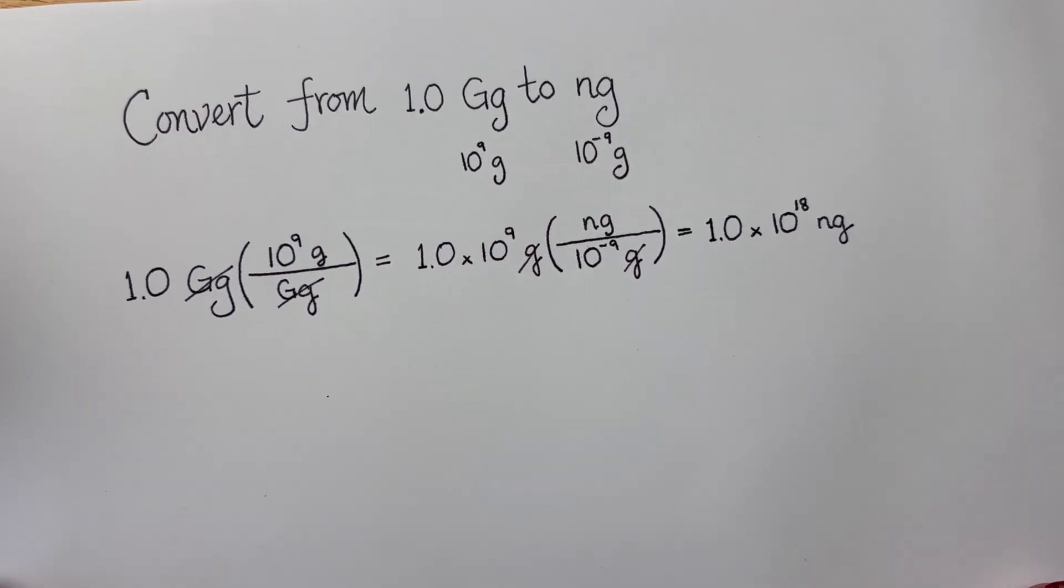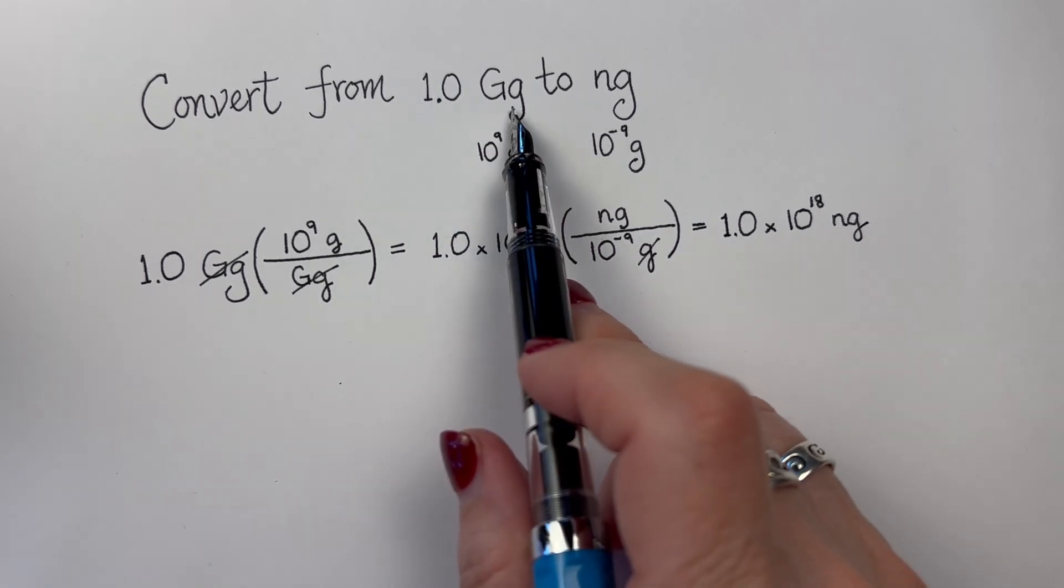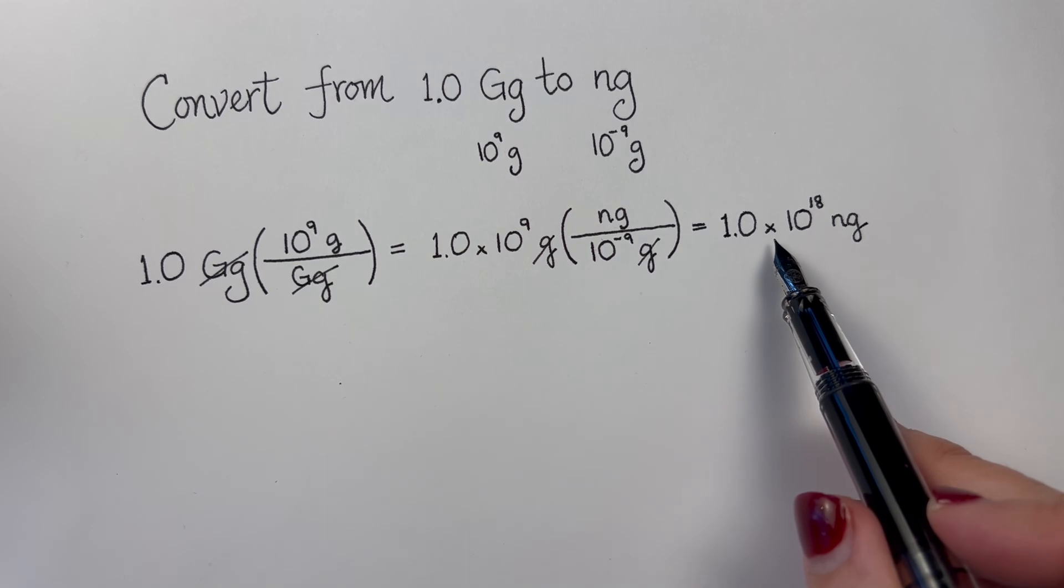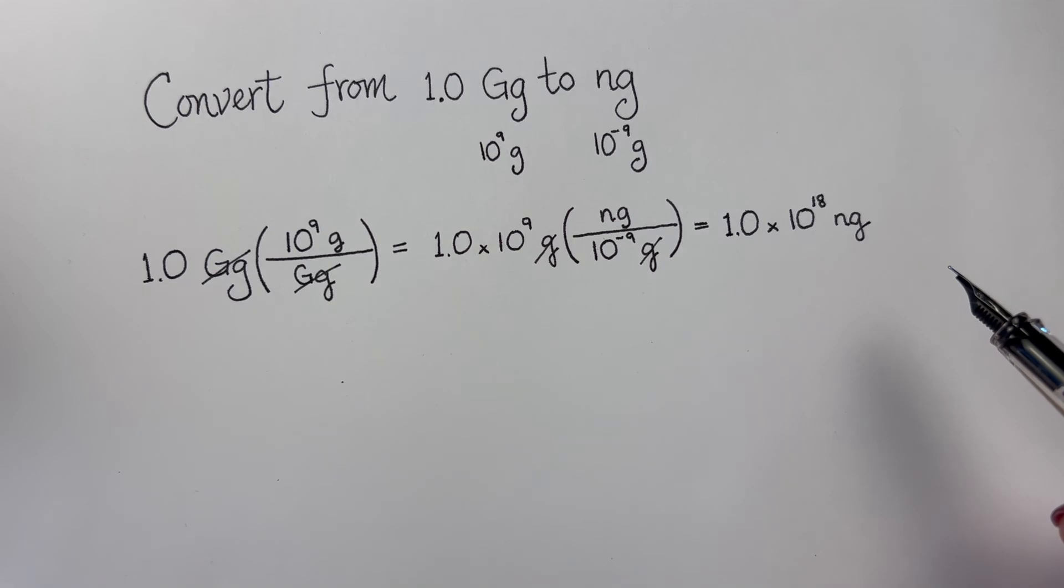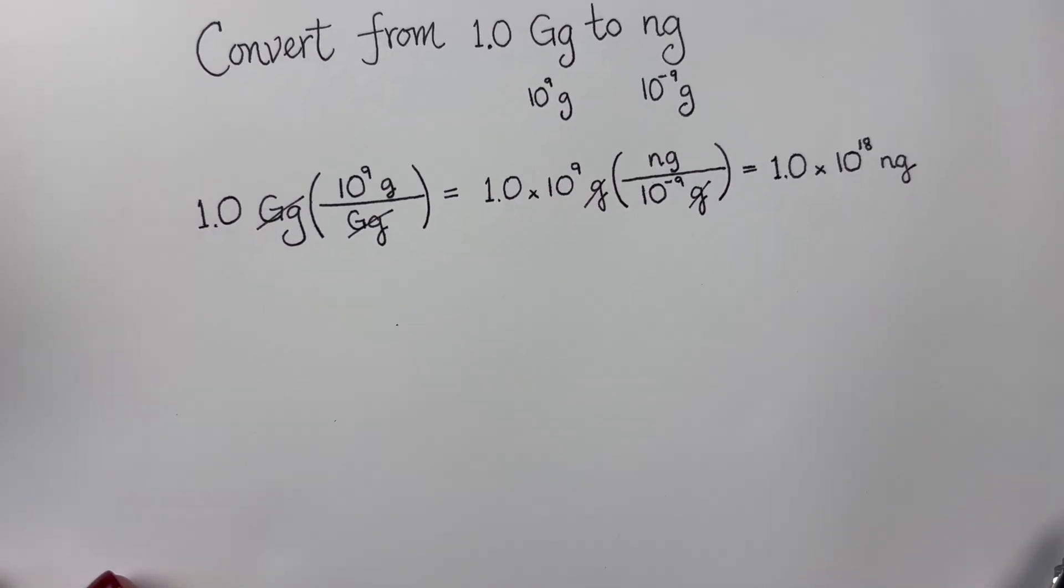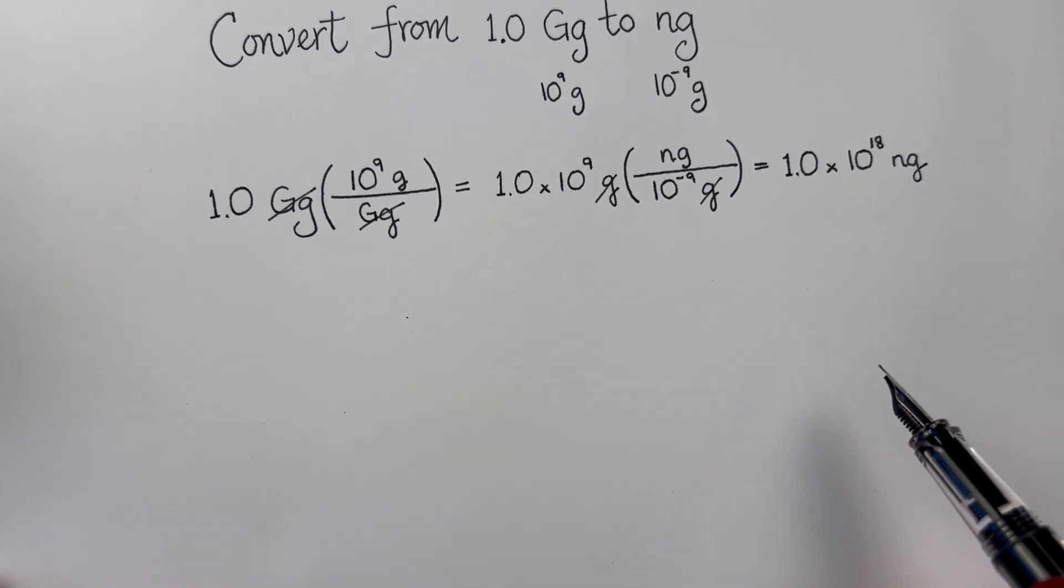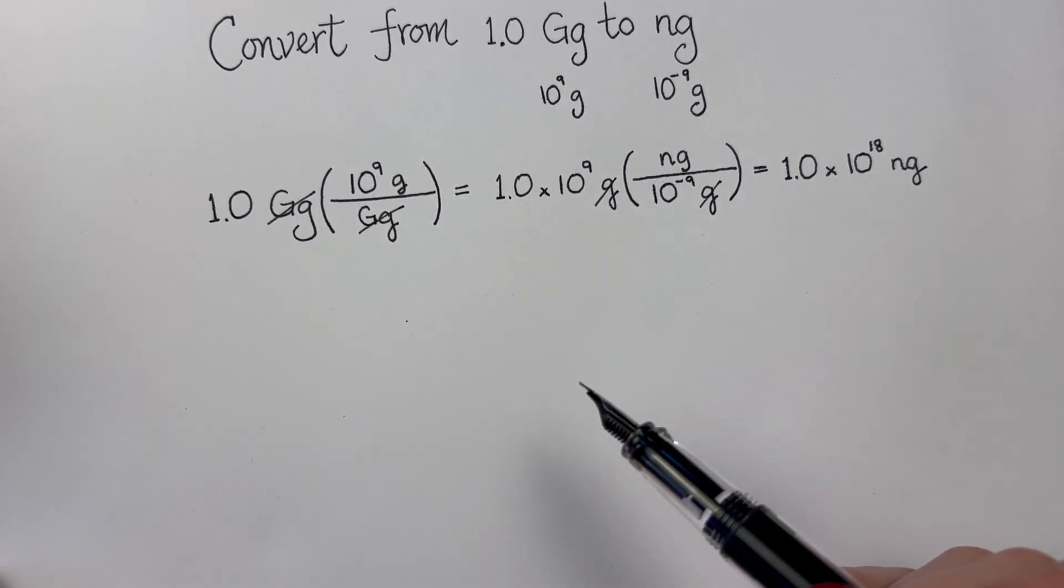So, final answer. Converting from a gigagram to a nanogram, there are 1 times 10 to the 18th nanograms in one gigagram. Alright. Shall we go the other direction? How about let's take something that's smaller and convert it to a unit that is larger.